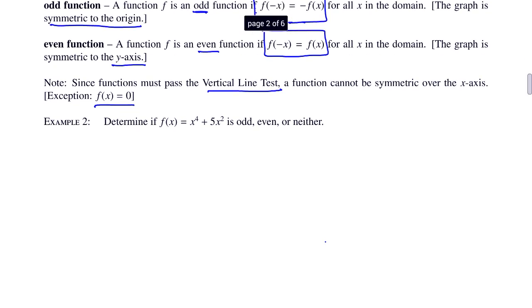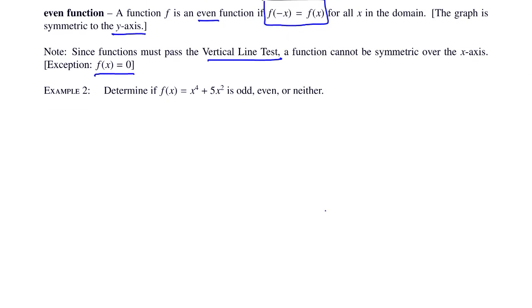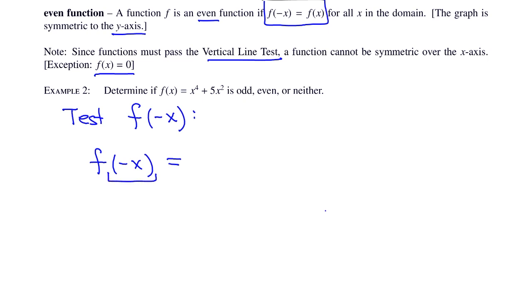Let's look at example two. Determine if f of x equals x to the fourth plus 5x squared is odd, even, or neither. The trick is to evaluate f of negative x and see what comes out. Plugging in, we get parentheses negative x to the fourth plus 5 times parentheses negative x squared. When you raise a negative to an even power, the negatives go away and become positive, so negative x to the fourth equals positive x to the fourth.